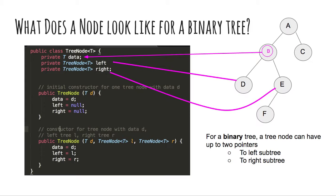Here, I have written a tree node class in Java. This tree node represents a node for a binary tree. Remember that in a binary tree, a node can have up to 2 pointers. One for the left subtree and another for the right subtree.